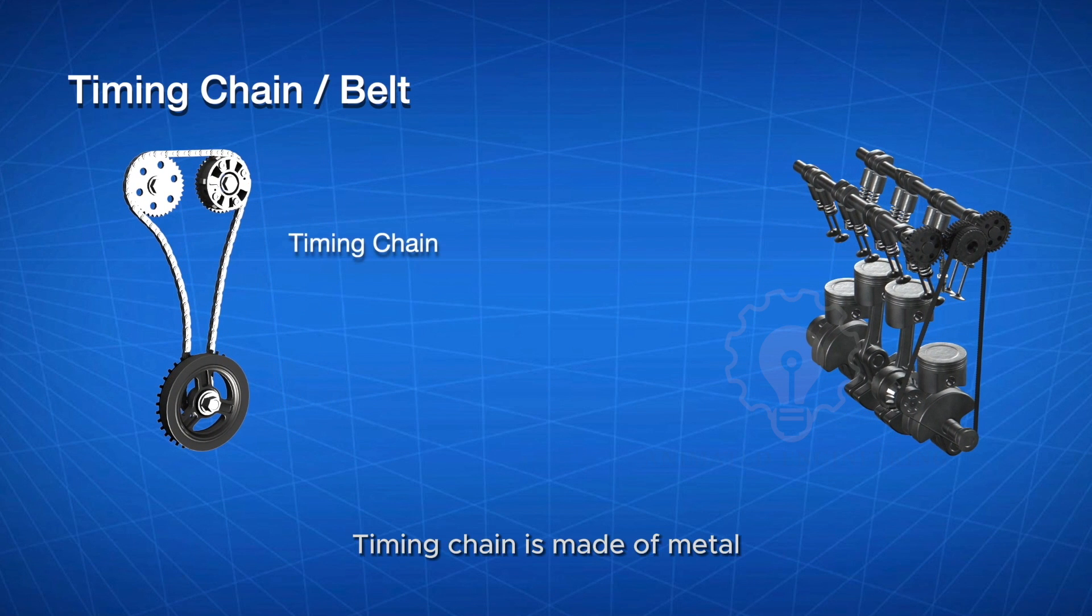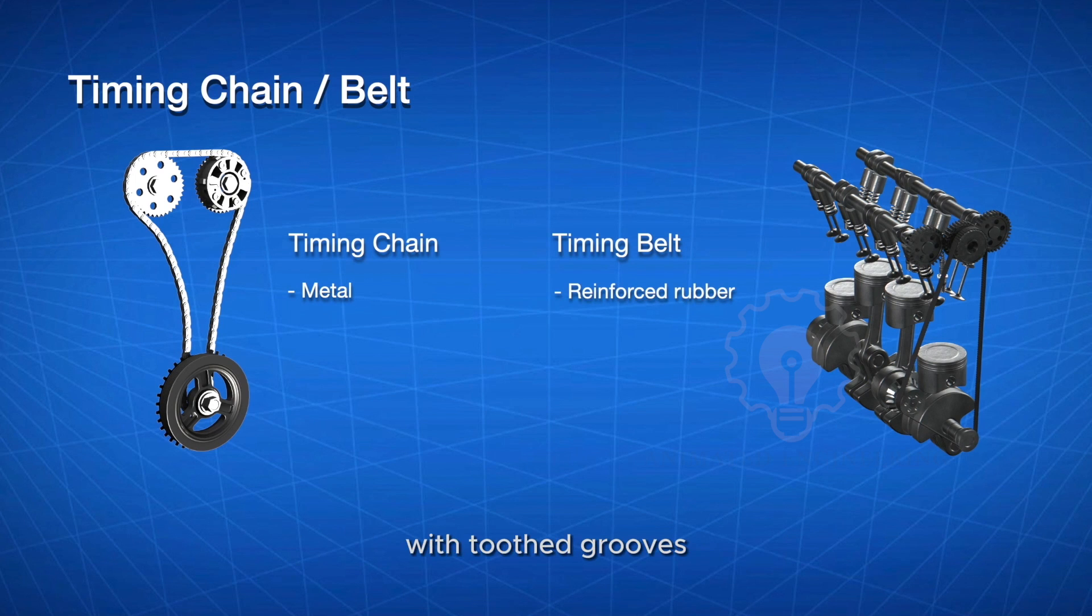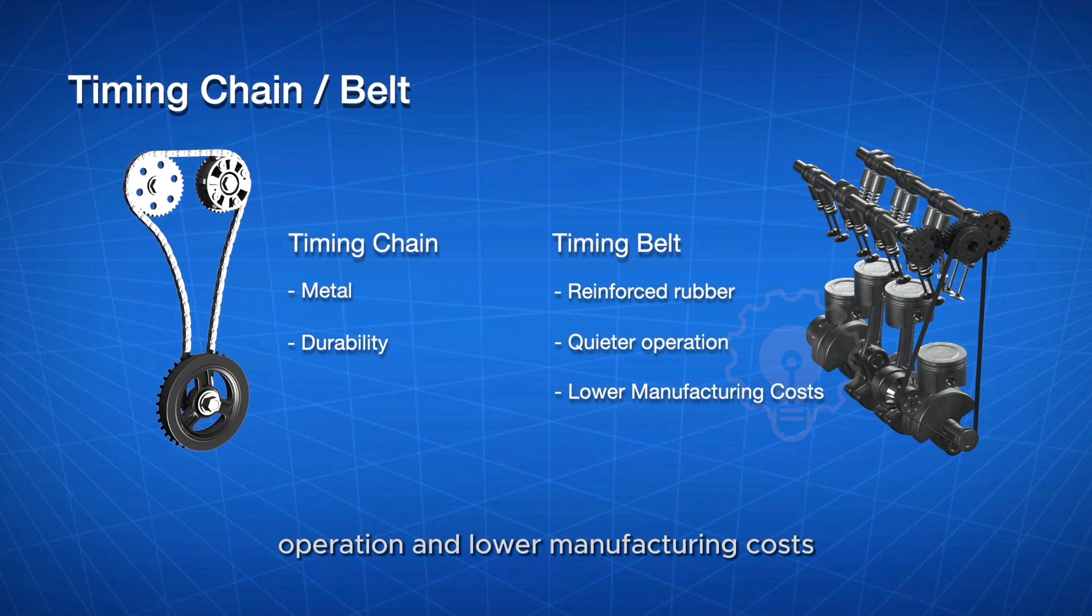Timing chain is made of metal, typically steel, while timing belt is made of reinforced rubber with toothed grooves. The choice between a timing chain and timing belt is often influenced by factors such as cost, engine design, and manufacturer preferences. Some engines use timing chains for their durability, while others opt for timing belts for their quieter operation and lower manufacturing costs.